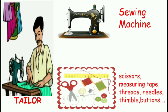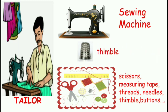Apart from the sewing machine, these are some of the other things a tailor uses: scissors, measuring tape, threads, needles, thimble, buttons, and so on. A thimble looks like this — it is cone-shaped, like a glass. It is worn on the finger so that the prick of the needle doesn't hurt you. It protects your finger from the pointed needle, and some tailors use a thimble for this purpose.